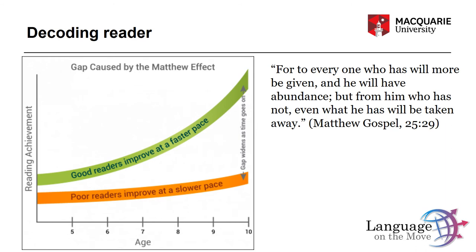This is because knowing the meaning enhances the reading. The more you read, the more you know. The more you know, the more you enjoy reading — and you get on with it in an ever more self-enforcing virtuous cycle. Conversely, the more you struggle with the basics of reading and decoding, the less you get out of it, and you may be locked into a negative cycle where you don't enjoy reading, don't want to do it, don't practice it, and don't improve.